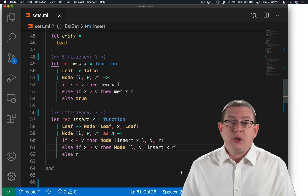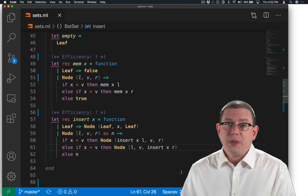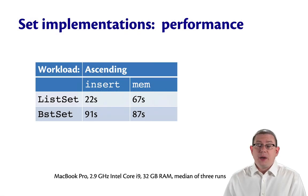Now, asymptotically, it's still the same performance for time. But the constant factor here gets a lot bigger. So that's why we end up with such an inefficient implementation with BST sets for the ascending workload.